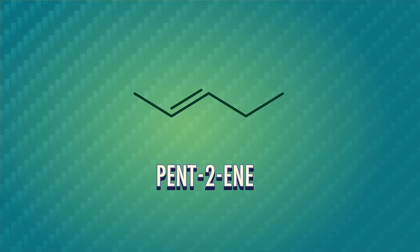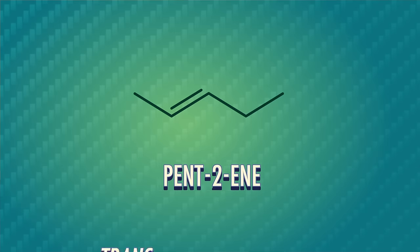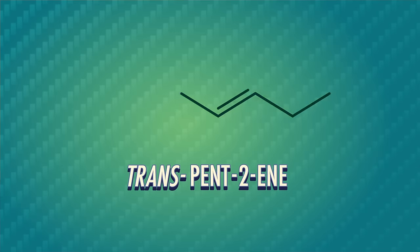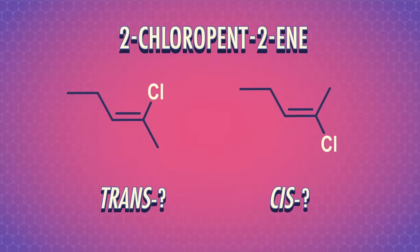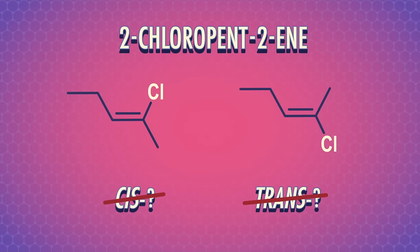For example, let's look at pentene. If the methyl and ethyl groups are on opposite sides around the double bond, we call it trans-pentene. And if the methyl and ethyl groups are on the same side around the double bond, we call it cis-pentene. But in the context of alkenes, cis and trans is an old-school naming system that only works when the double bond carbons are attached to two hydrogens and two R-groups. If we consider something like 2-chloropentene, the cis and trans system fails to help us accurately communicate where the groups are, so we need a better way.